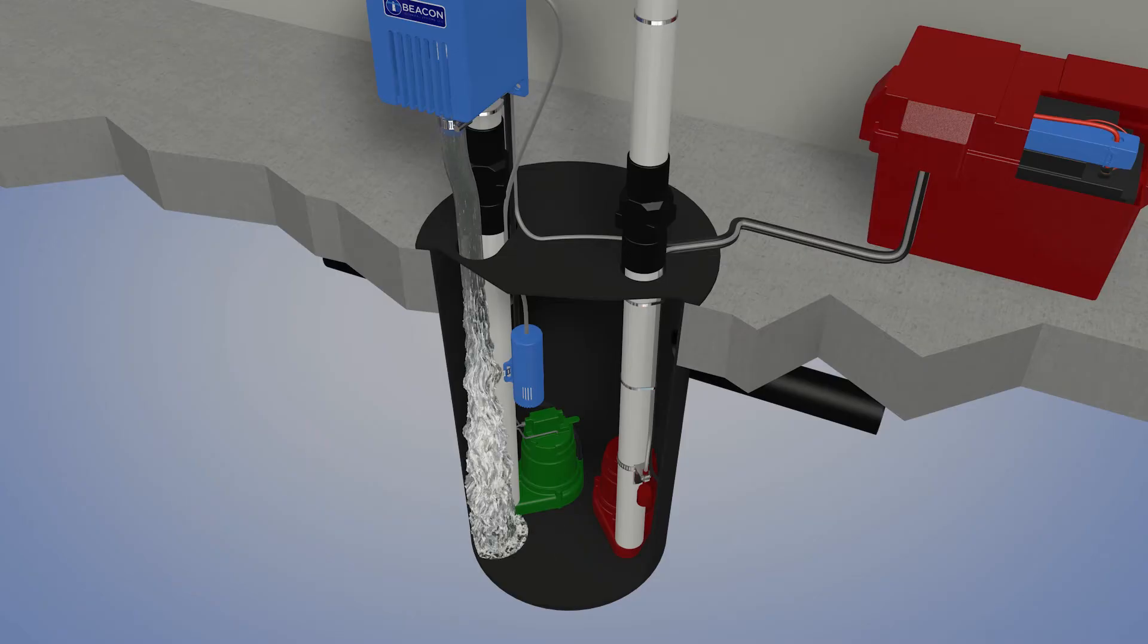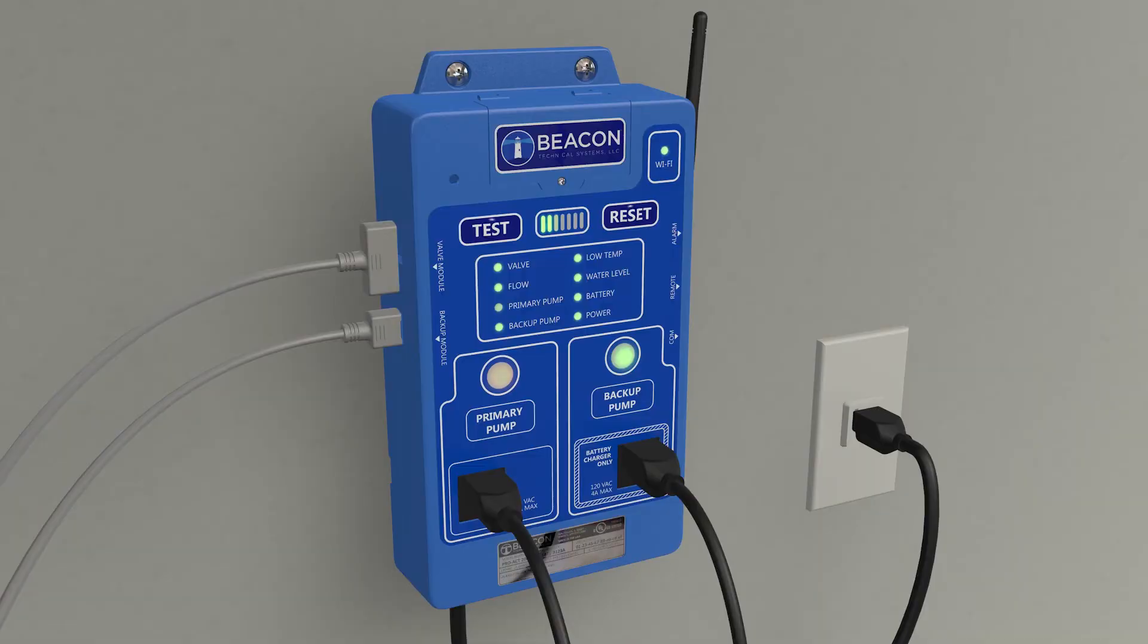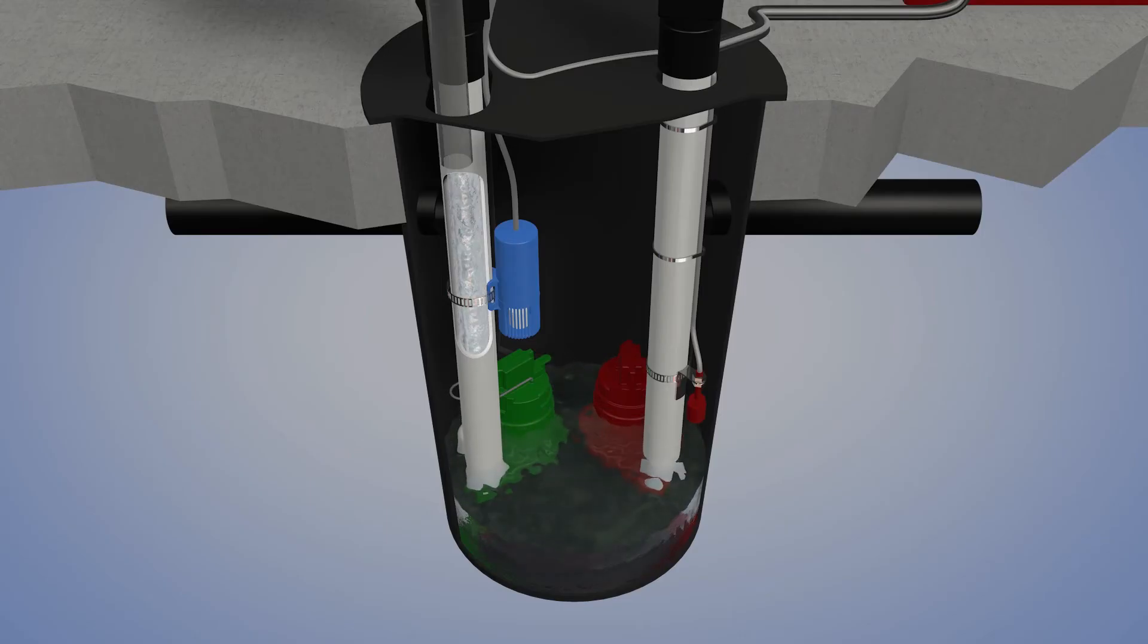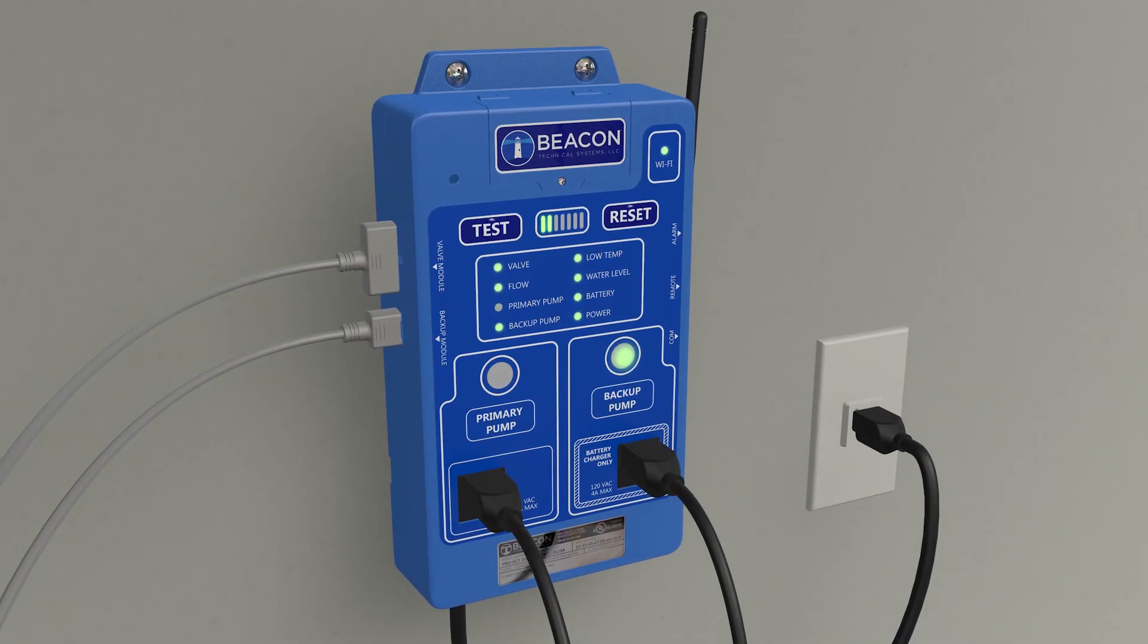During the calibration cycle, the valve module opens to emit fresh water into the pit until the primary pump float switch is triggered and the pump operates to pump water from the pit. During the calibration of the primary pump, the corresponding status indicator light flashes amber and will turn to steady green when the calibration is successful.